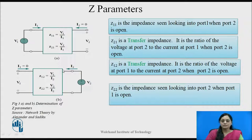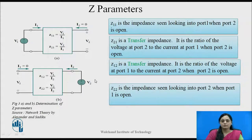From figure 3b, current I1 is made equal to zero, which indicates that port 1 is kept open. From this condition, we can find Z22 and Z12. Z22 is called the driving point impedance of port 2, and Z12 is called the transfer impedance — it is the ratio of voltage V1 to current I2. By making the currents equal to zero, which means keeping some ports open, these Z parameters can be found. Hence, these parameters are called open circuit parameters.